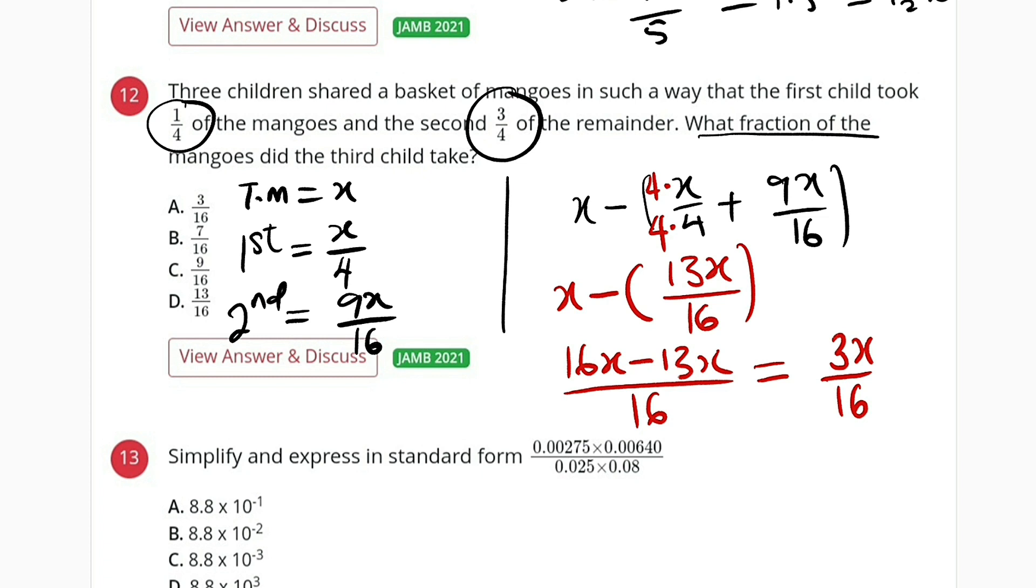But we are only concerned with the fraction, which is 3 over 16. And you can see it as option A. So 3 over 16 of the total number of mangoes is what the third person got.